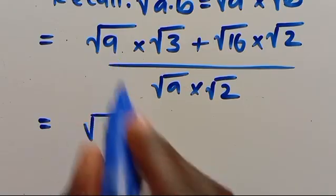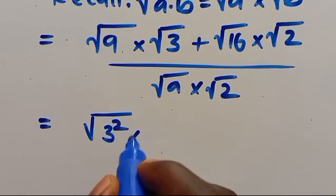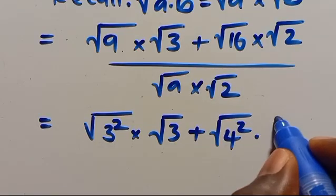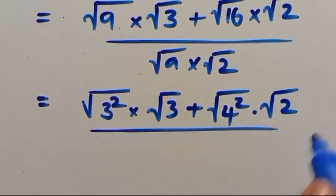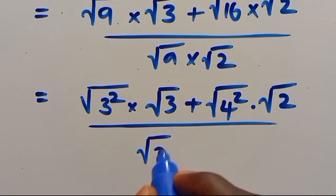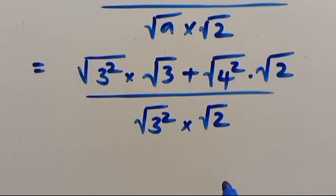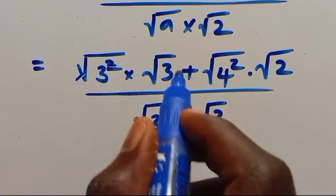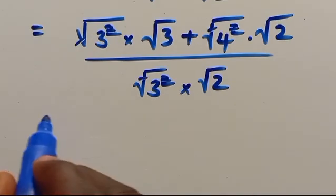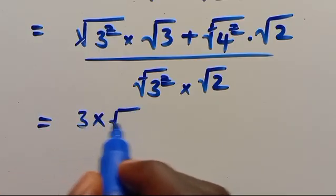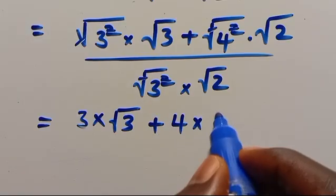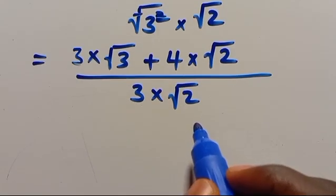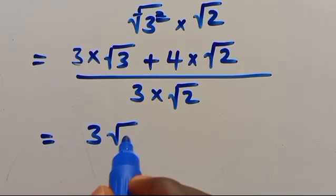We can have 9 as a perfect square — 3 squared — times root of 3, plus we can have 16 as a perfect square — 4 squared — times root of 2, over 3 squared times root of 2. When we have a square and a square root, they cancel each other. So this gives us 3 times root of 3, plus 4 times root of 2, over 3 times root of 2.